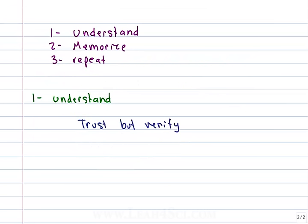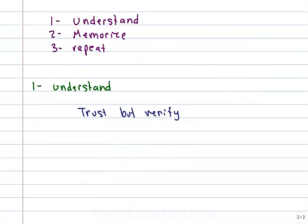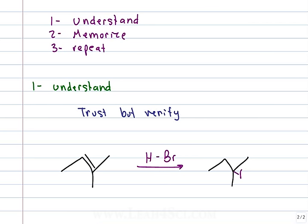A lot of you are saying Markovnikov's rule adds to the more substituted carbon — hydrogen wants to go hang out with his friends. This sounds like something you memorized. But what if you're faced with something that doesn't follow Markovnikov's rule or has some exception? Let's quickly review it. Markovnikov's rule tells us that with an asymmetrical alkene doing a reaction with a carbocation intermediate — for example, adding HBr — the bromine adds to the more substituted carbon and hydrogen to the less substituted carbon.